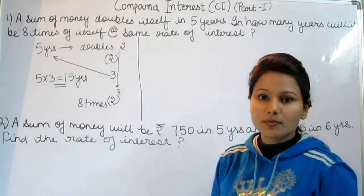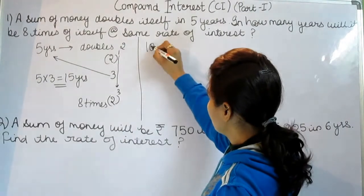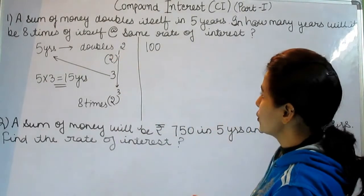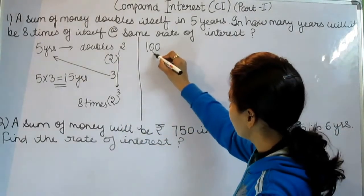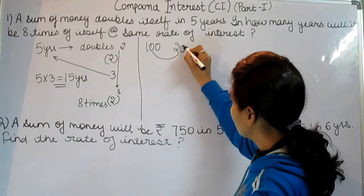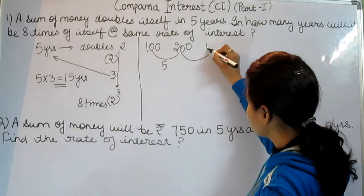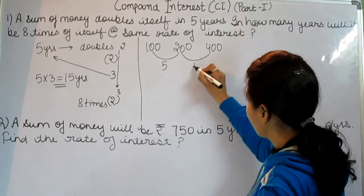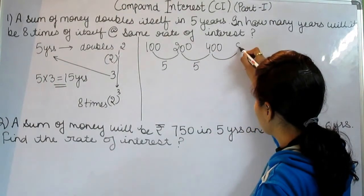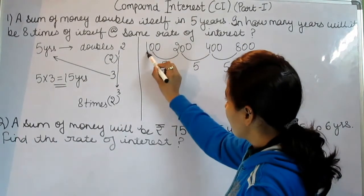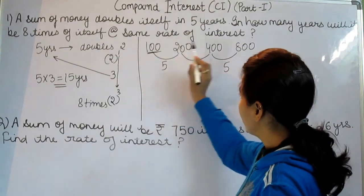Let's say our principal was 100. And as per the problem, the sum of money doubles itself. It becomes double in 5 years. Now again it doubles in 5 years. Now again it doubles in 5 years.